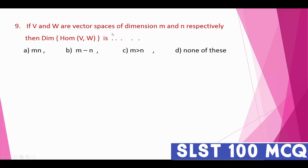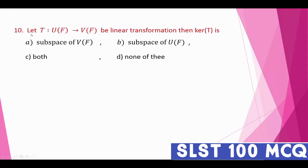Question number nine: if V and W are vector spaces of dimension m and n respectively, then the dimension of V⊗W is option A: mn. The correct answer is option A — mn.